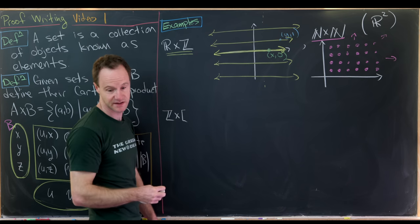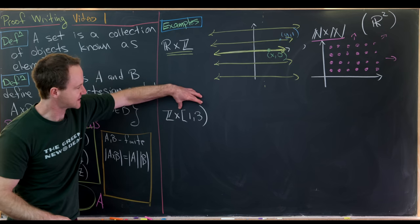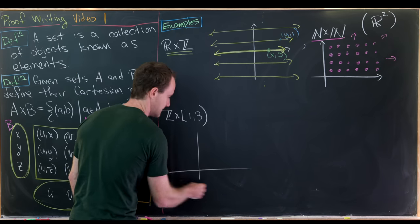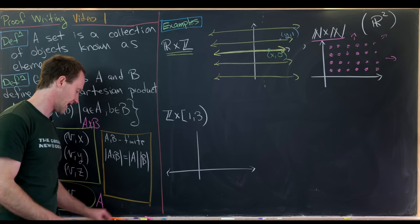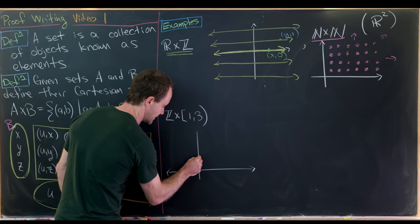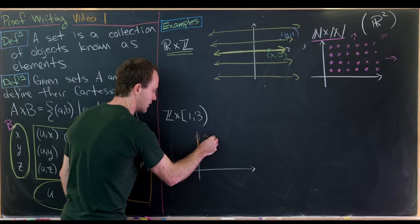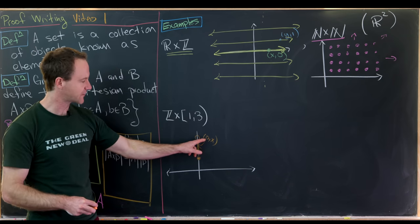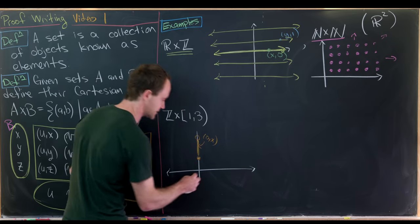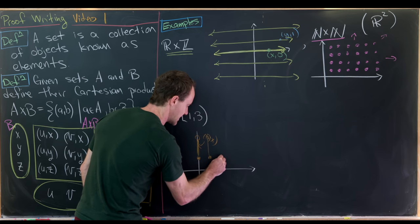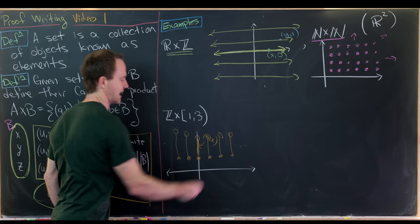Let's look at ℤ × [1, 3) — the integers crossed with the half-open interval including 1 but not 3. All first coordinates are integers and all second coordinates are real numbers between 1 and 3. So at each integer on the x-axis we get a vertical line segment from height 1 up to but not including height 3. This gives an infinite collection of parallel half-open line segments.